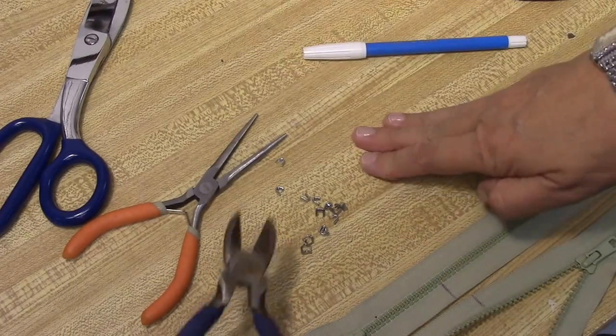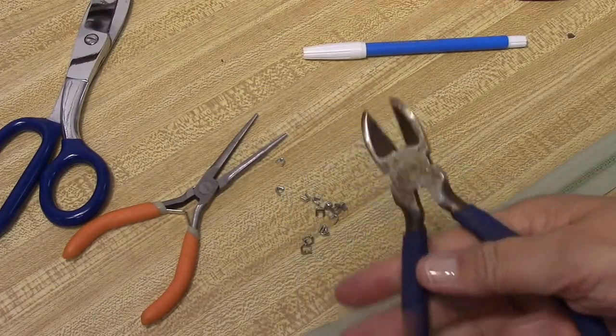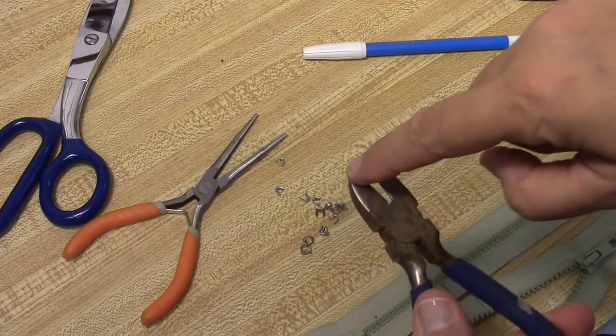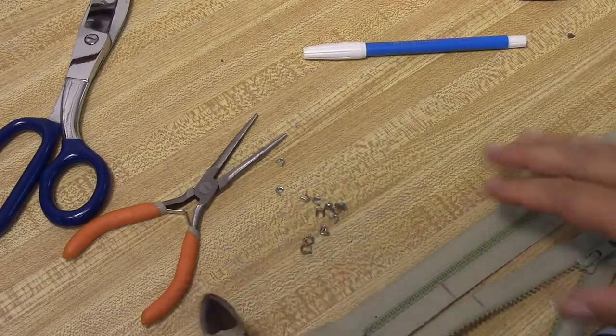The first thing I want to show you are the tools. I have a pair of what I call nippers. They have a long sharp edge here on both sides and I cut the teeth off with these.